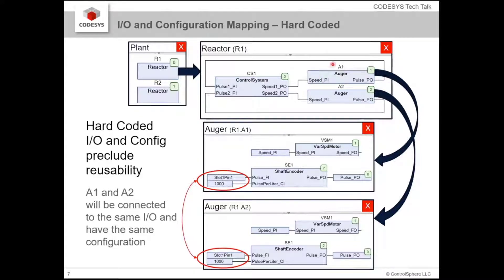Unfortunately in this kind of system, if we were to hard-code these, they would be permanent — this auger would be connected to that IO and this auger to this IO. The only way we could make this work is to make a copy of this auger — four copies, because there are two augers in each reactor. We'd have to make copies and hard-code that information into each copy. Now we've got duplicate code, which is something you'd never want, and the object is no longer reusable.